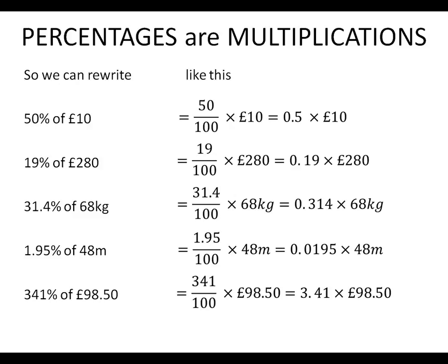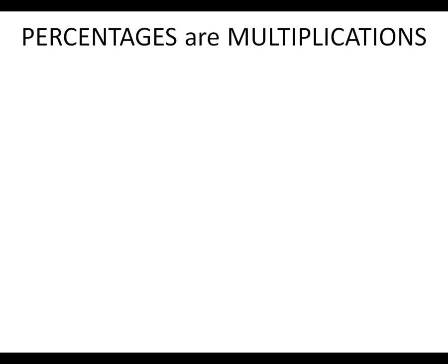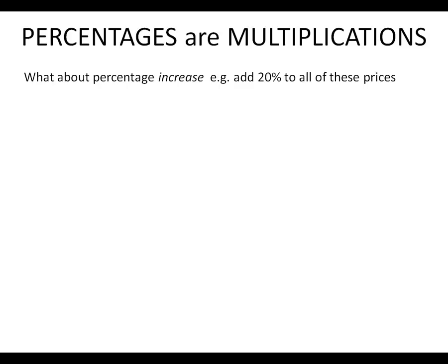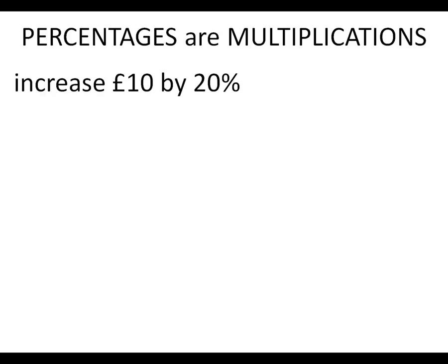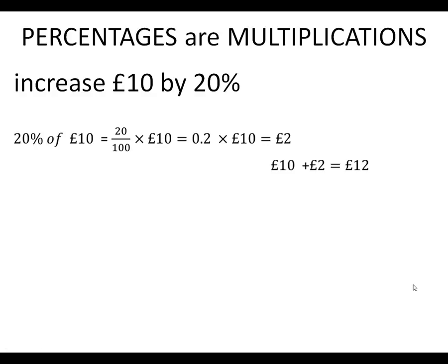This works for percentages over 100% too: 341% of a number is simply 3.41 times that amount. This is particularly useful for percentage increases. Say we want to add 20% to a set of prices. We could work out 20% of £10 — that's 0.2 times 10, which equals £2 — and then add it onto the original £10 to get £12.